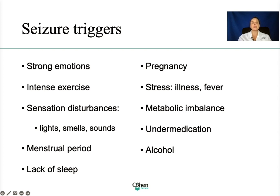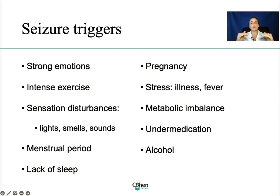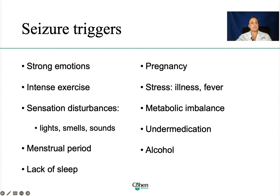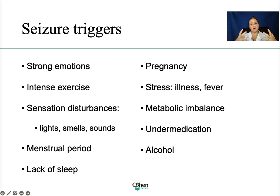What can trigger a seizure? Think of stress. Anything that can cause stress to the body, or anything that can lower the seizure threshold, can trigger a seizure. Examples include strong emotions, intense exercise, sensory disturbances, menstrual period, lack of sleep, medications, alcohol, and pregnancy. Anything that causes stress to the body or lowers that threshold can certainly trigger a seizure.